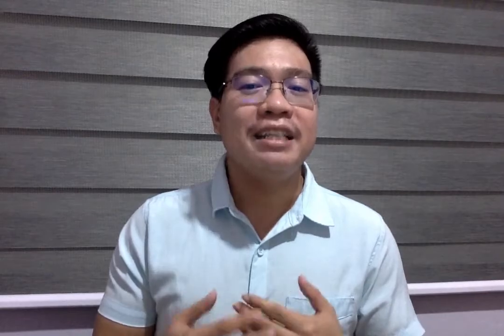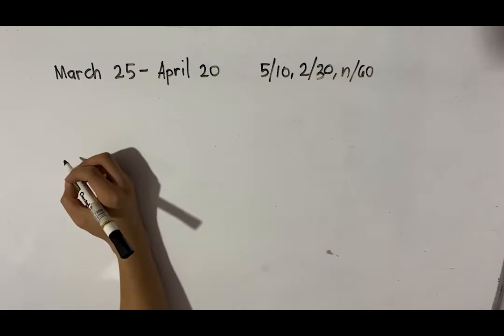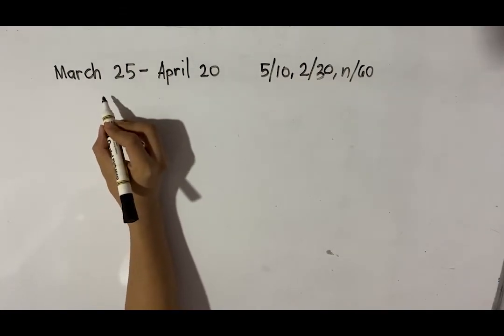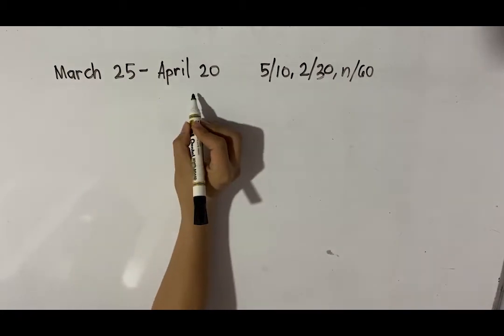Let us have example number one. An invoice for P752.84, dated March 25, terms 5/10, 2/30, net 60, is to be paid on April 20. What is the amount to be paid to settle the account? We need to find out first the number of days from the date of invoice to the date of payment.